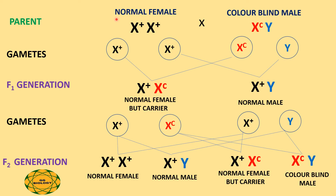The first type of marriage is between a normal female and a colorblind male. The female shows the presence of two X chromosomes, both with the dominant gene, represented as X+X+, and hence she is normal. The male possesses one X chromosome with the recessive gene for color blindness (represented as small letter c) and one Y chromosome, and hence he is colorblind.